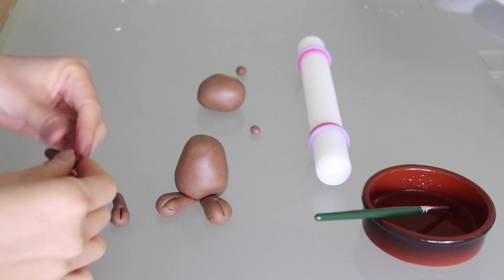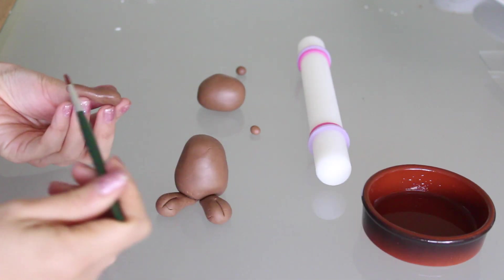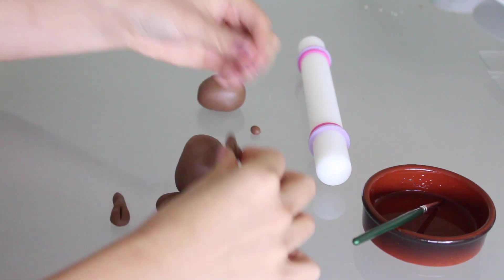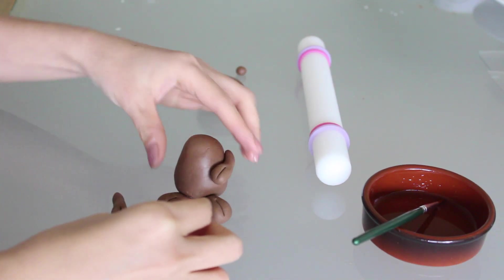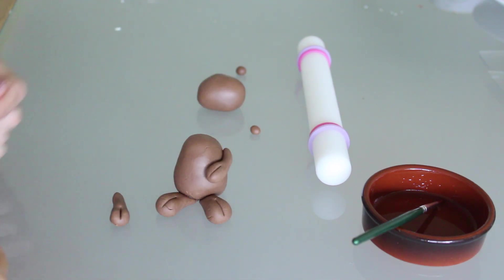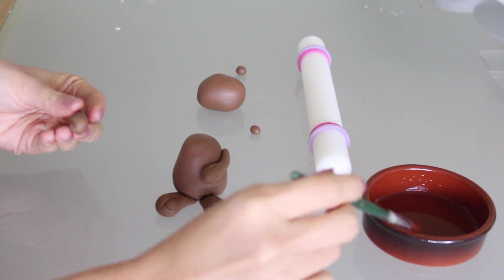To attach the arms, brush some water or alcohol onto the side of the arm, and then position it onto the body. To help it stay in position, you might have to hold on to it for a while while the alcohol or water dries out. Do the same with the other arm.